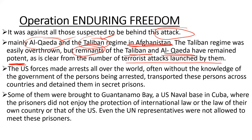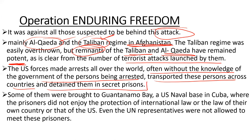The US forces made arrests all over the world. Whatever they found related to Al-Qaeda, they arrested those people — often without the knowledge of the government of the country where the arrest was made. These persons were transported across countries and detained in secret prisons. Some were brought to Guantanamo Bay, a US naval base in Cuba, where prisoners did not enjoy the protection of international law, their own country's law, or US law.